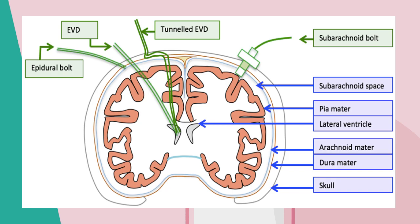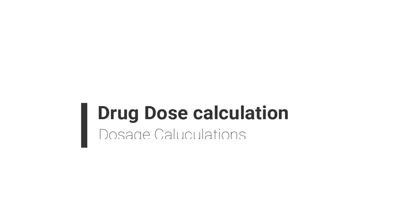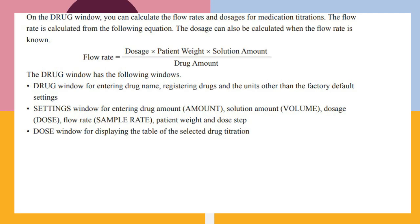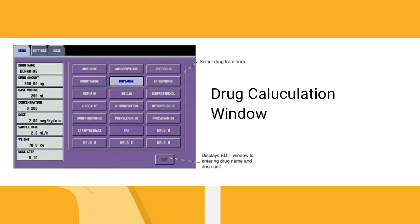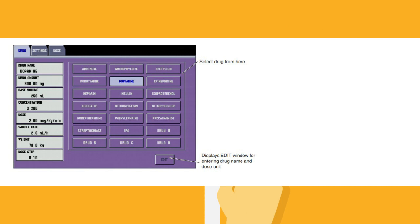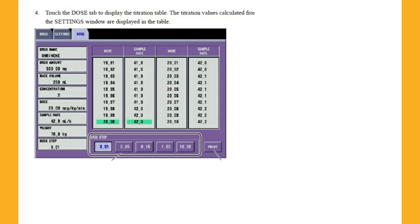The next feature of higher-end patient monitors is drug dose calculations. Most higher-end patient monitors include this feature, where the anesthetic system calculates different doses of drugs and stores them on the patient monitor, which can be used during operation and during recovery of patients.